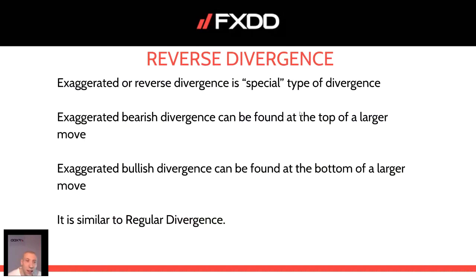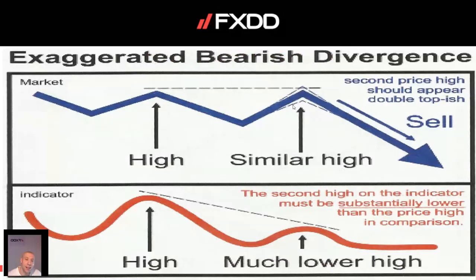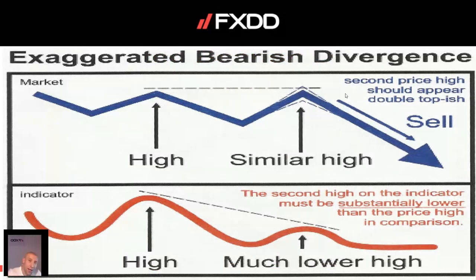This is how it looks. Usually we will see a double top on the price and a much lower high on the indicator itself — that is exaggerated bearish divergence. Double top and much lower high. For exaggerated bullish divergence, you will have a double bottom and a much higher high on the indicator. This is a spreadsheet you might want to use, but most of the time you will be going with regular divergence, because that is what traders who want to trade counter the trend are most interested in.